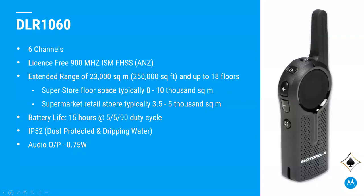Looking at the radio itself: six channels or six talk groups can be set up. It works on the 900MHz spread spectrum ISM band for the ANZ region. The coverage range is stated at 23,000 square meters and up to 18 floors. To give you an idea of those sizes — big mega superstore floor spaces are typically around eight to ten thousand square meters, and supermarket retail stores are typically around three and a half to five thousand square meters — so that gives you an idea of the type of coverage you'll get.